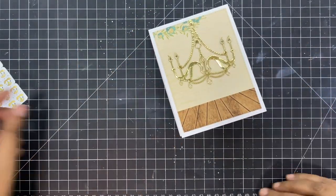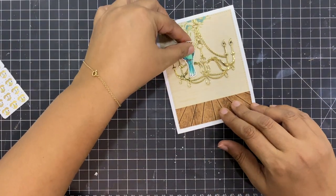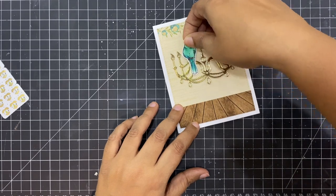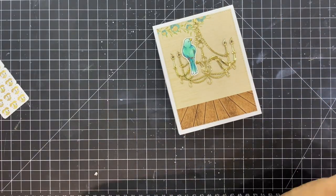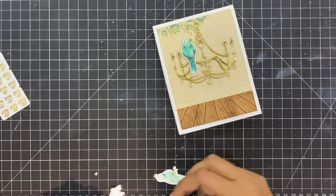I've used some stamps and colored them using Copic markers. I'm going to use these beautiful birds to create a scene as if they're sitting inside a room and singing a beautiful melody.